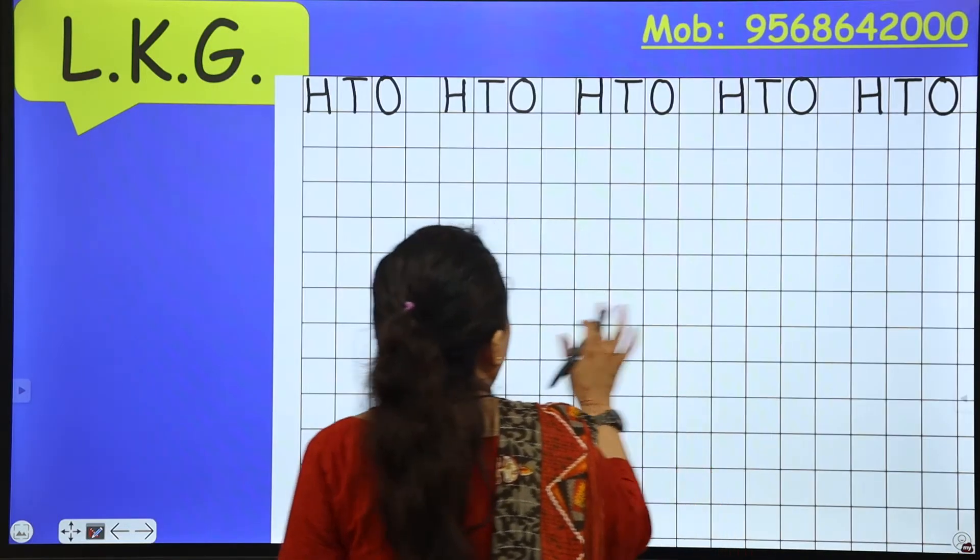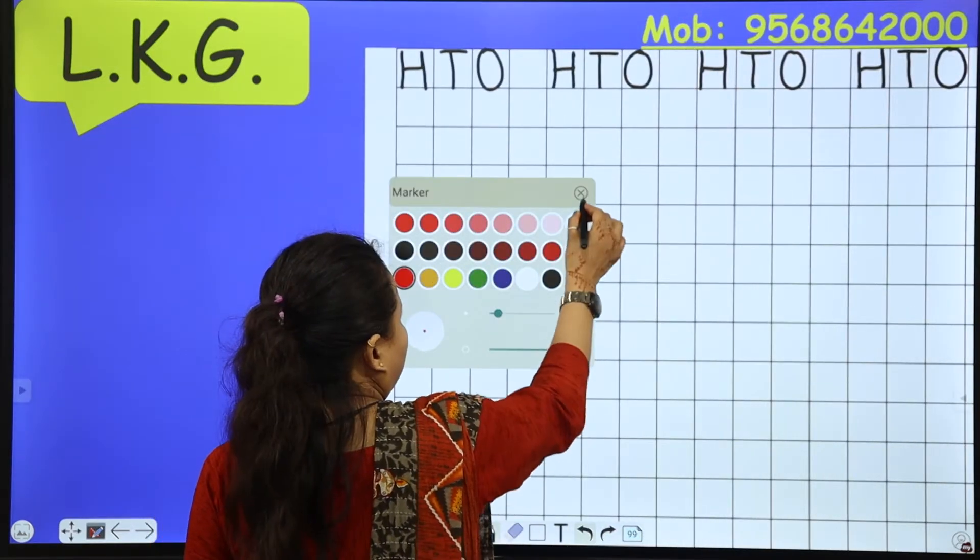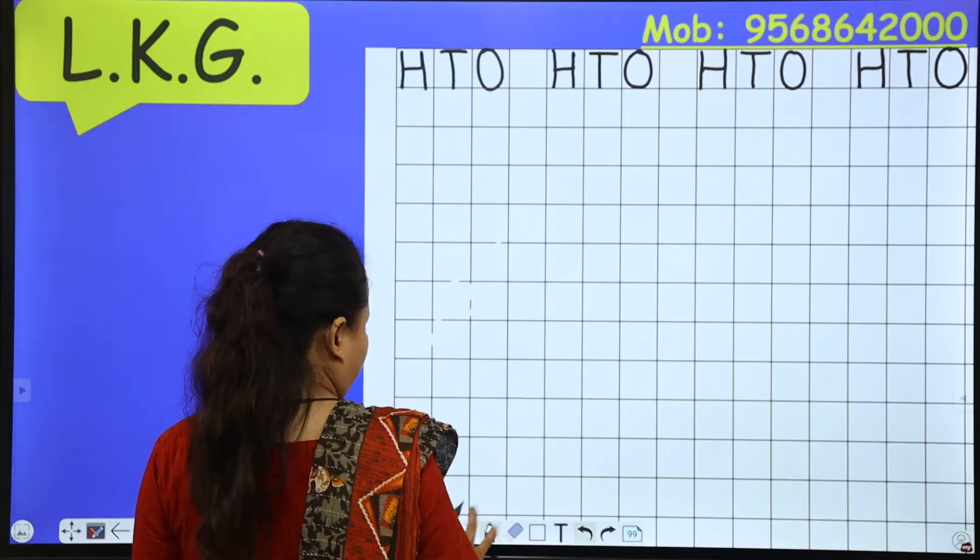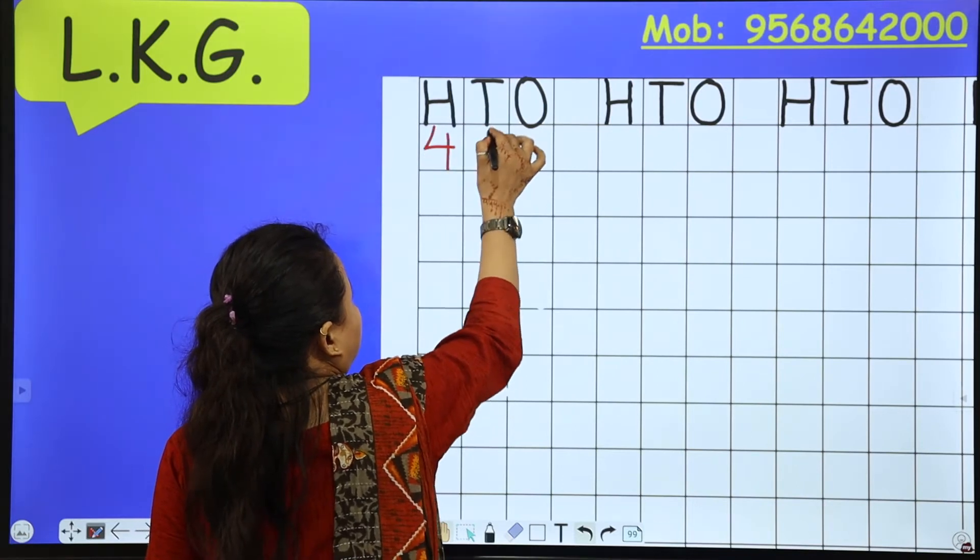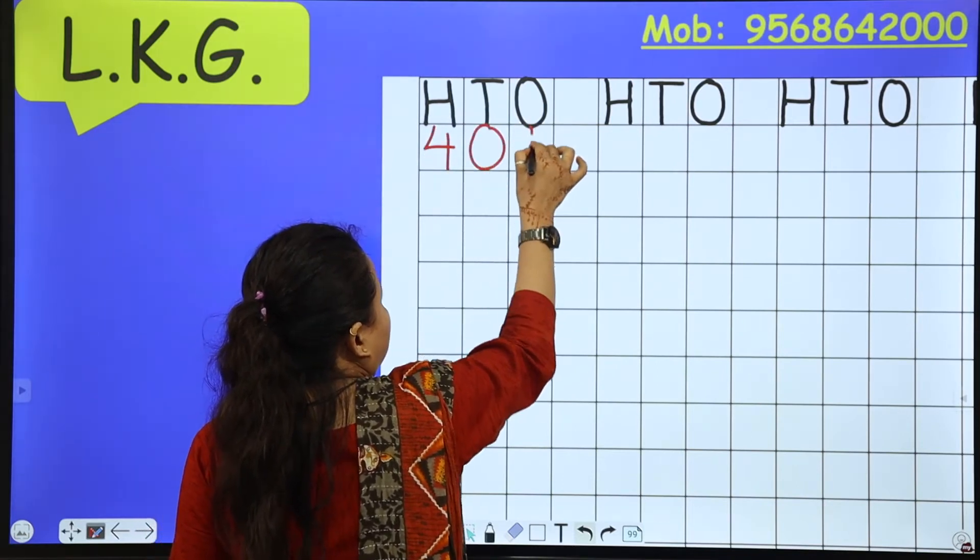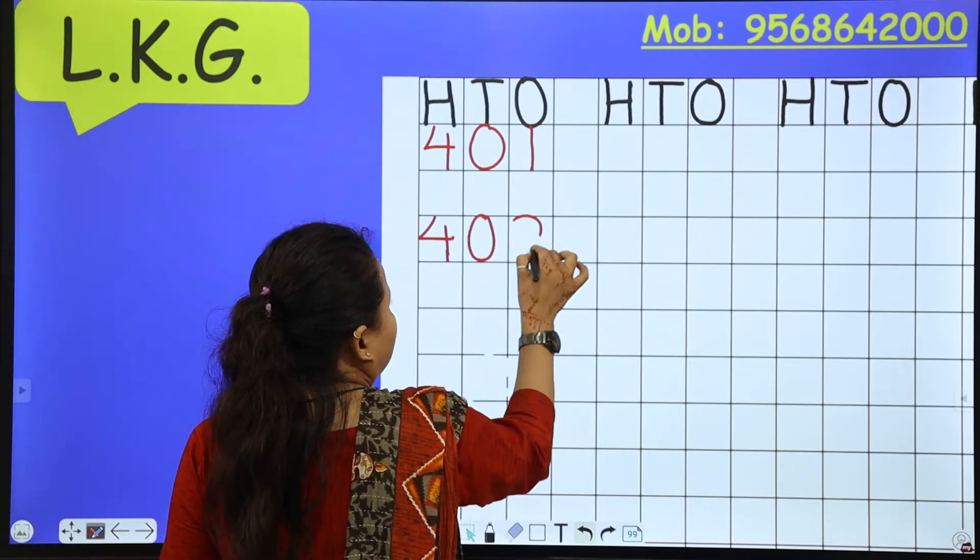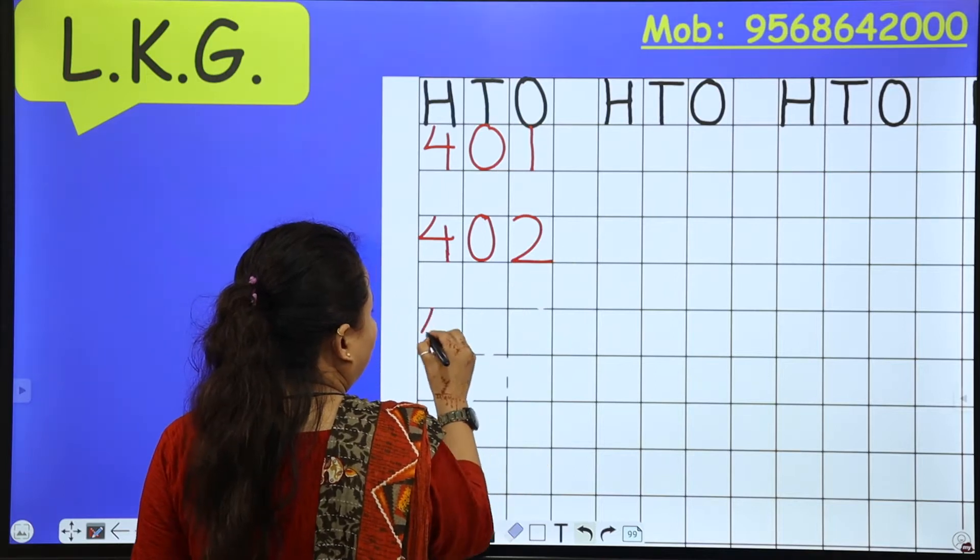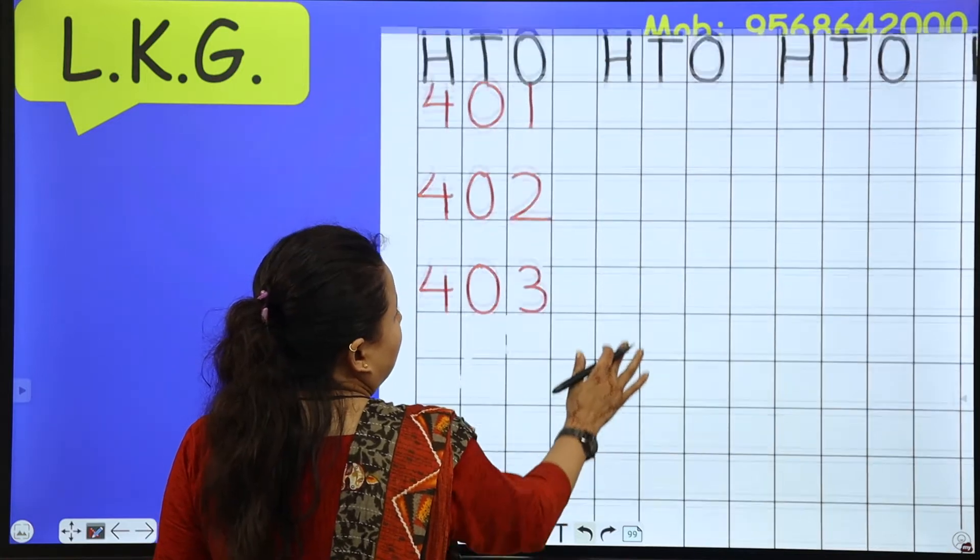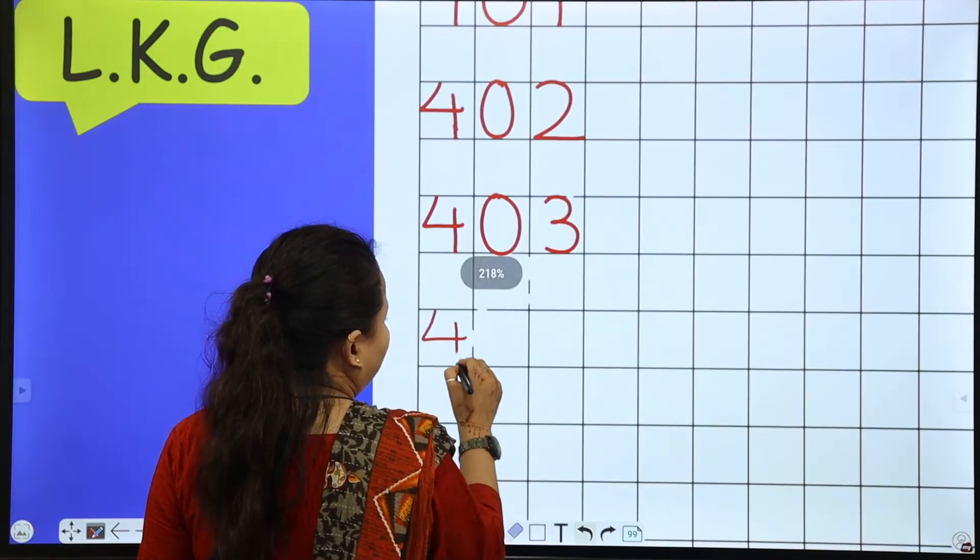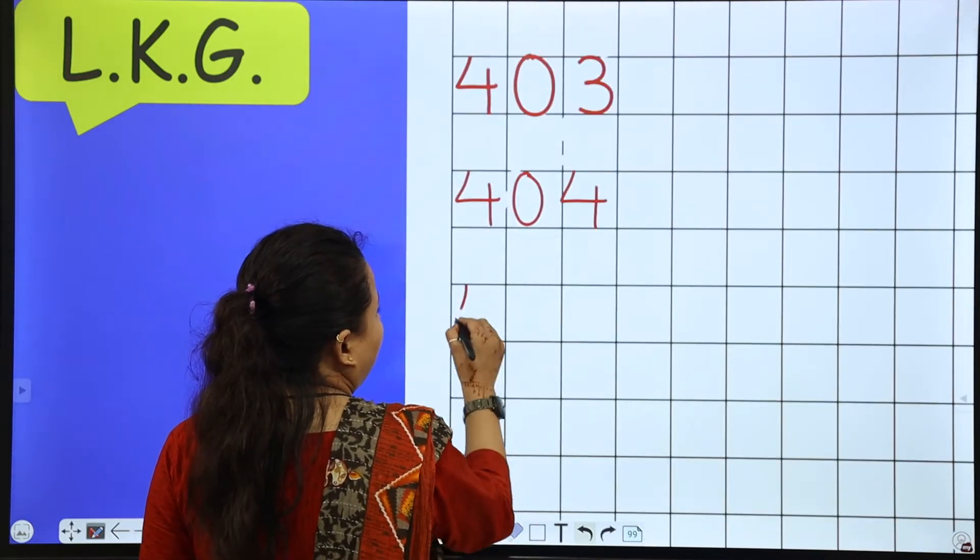Okay. So now start with 401. Yes. So 401, 402, 403. Next is 404, 405.